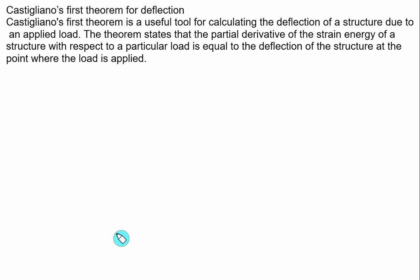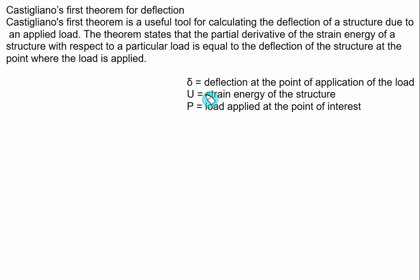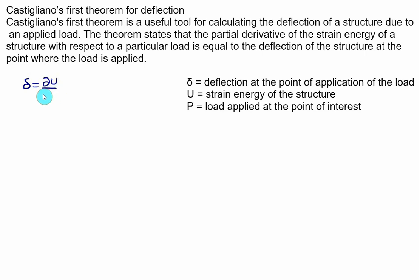One major application of strain energy in beams is finding deflection, for which we use Castigliano's first theorem. According to this theorem, the partial derivative of the strain energy of a structure with respect to a particular load equals the deflection of the structure at the point where the load is applied. Mathematically, deflection δ equals the partial derivative of strain energy U with respect to the load P applied at that point.